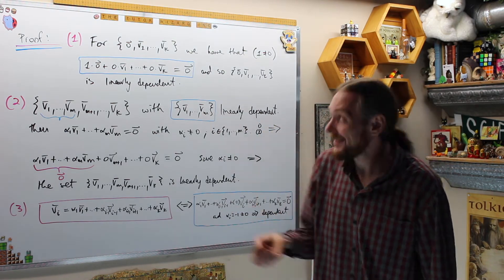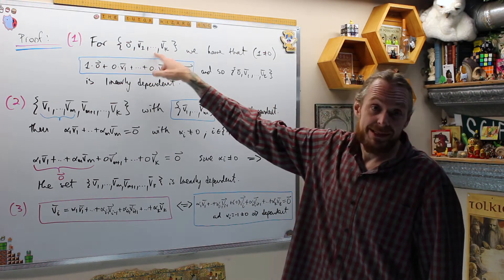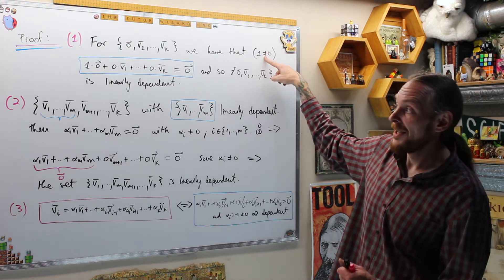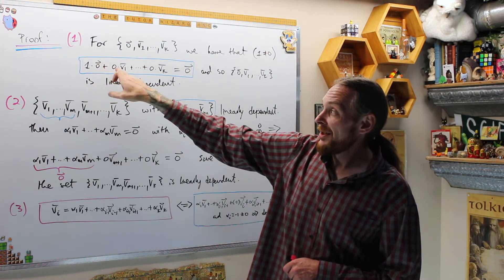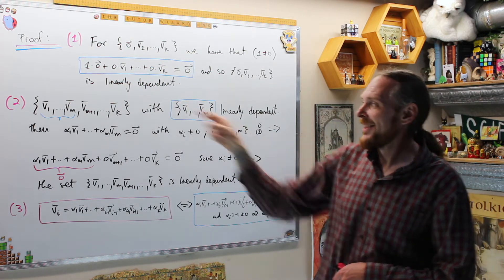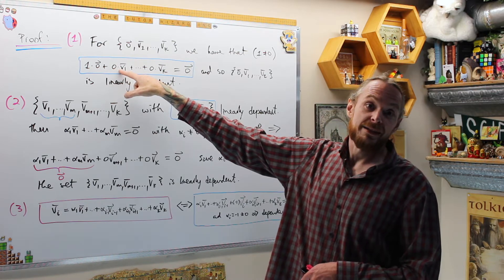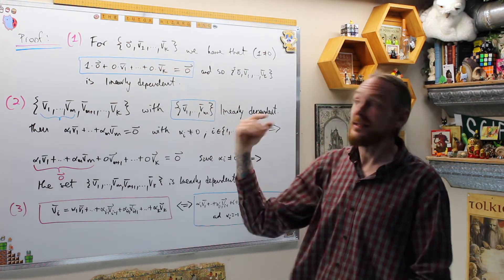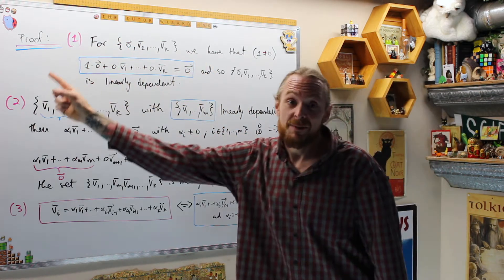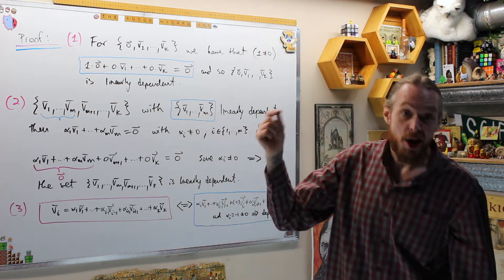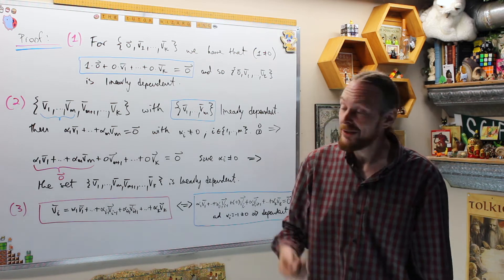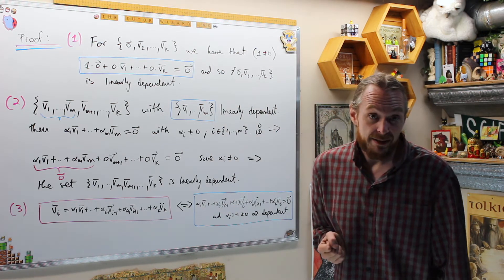The proofs of these three properties: from the definition of linear dependence, if the zero vector is in a set, we cleverly use the coefficient 1 — which is not zero — for the zero vector, and zero for all the other vectors' coefficients. All those terms become the zero vector, and 1 times zero is zero. So we've written zero as a linear combination where at least one coefficient is non-zero, giving us linear dependence by definition.